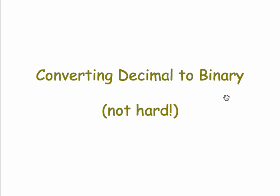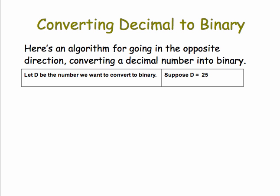How about converting in the opposite direction, starting with a decimal number and converting it to binary? That's not hard either. Here's a simple algorithm that we can use. Let's let d be the number we want to convert. In this case, let's suppose d is 25.